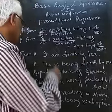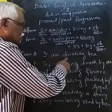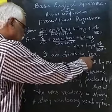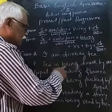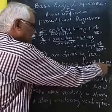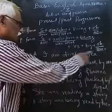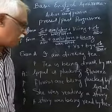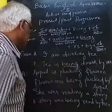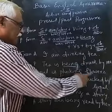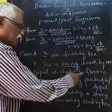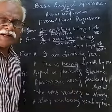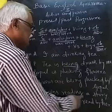Let's take up these examples. 'I am drinking tea' — it is in present progressive form. Tea is the object here and becomes the subject: 'Tea is being drunk by me.' 'Gopal is plucking flowers' in present progressive form becomes 'Flowers are being plucked by Gopal' in passive form.